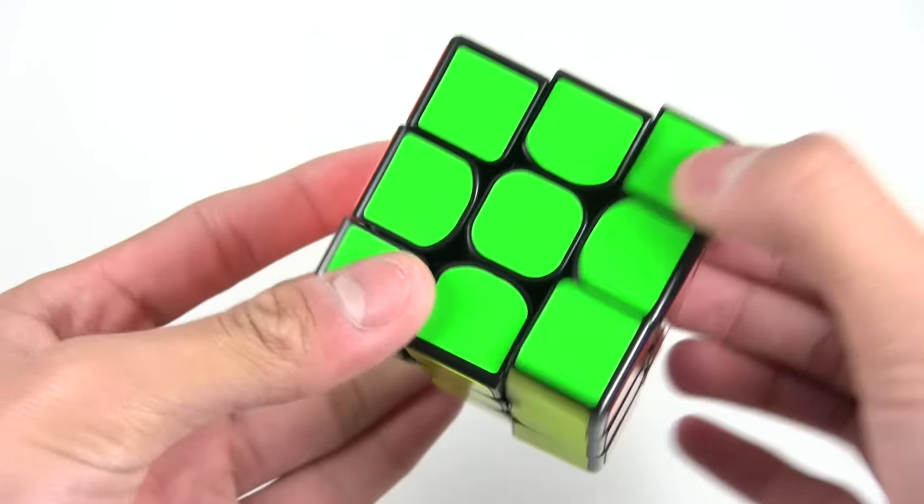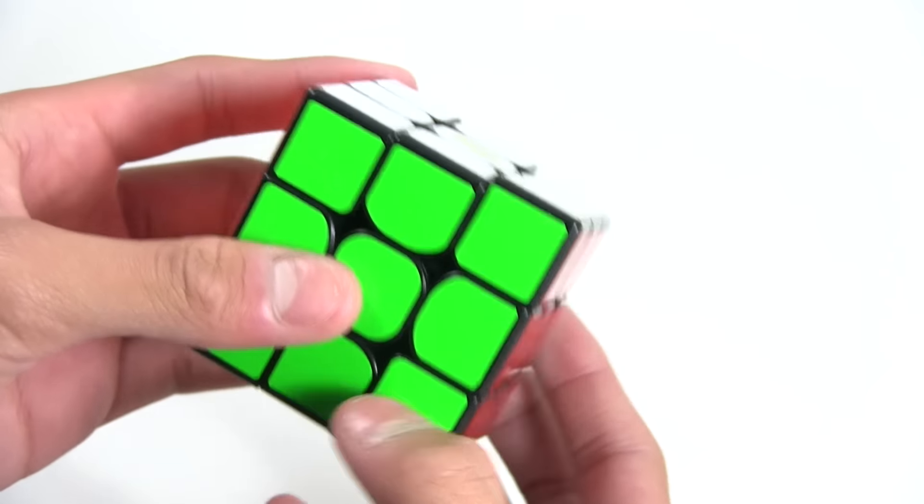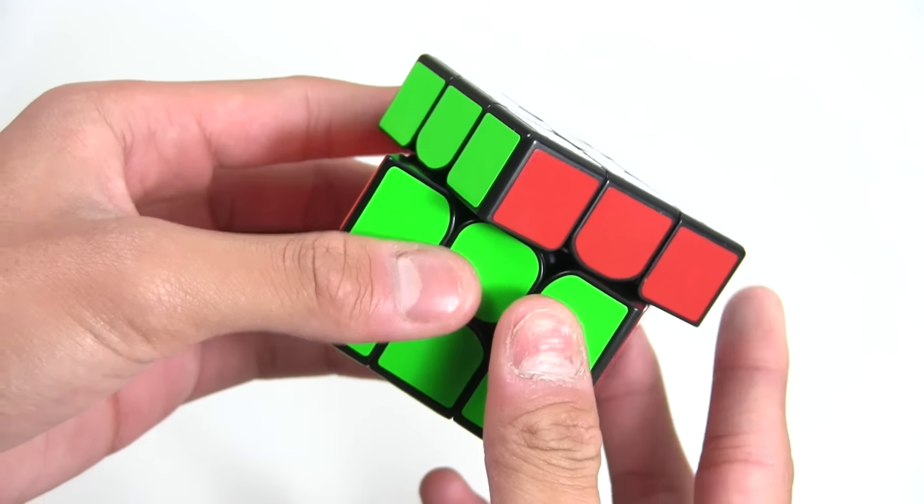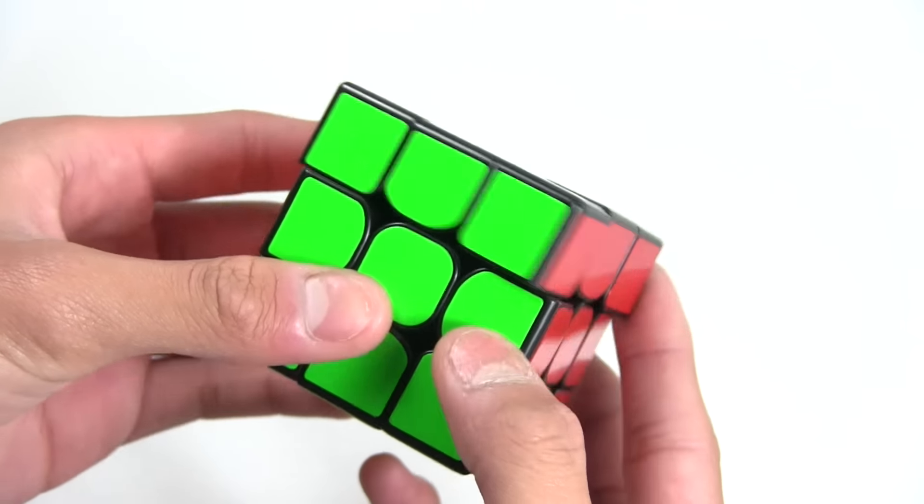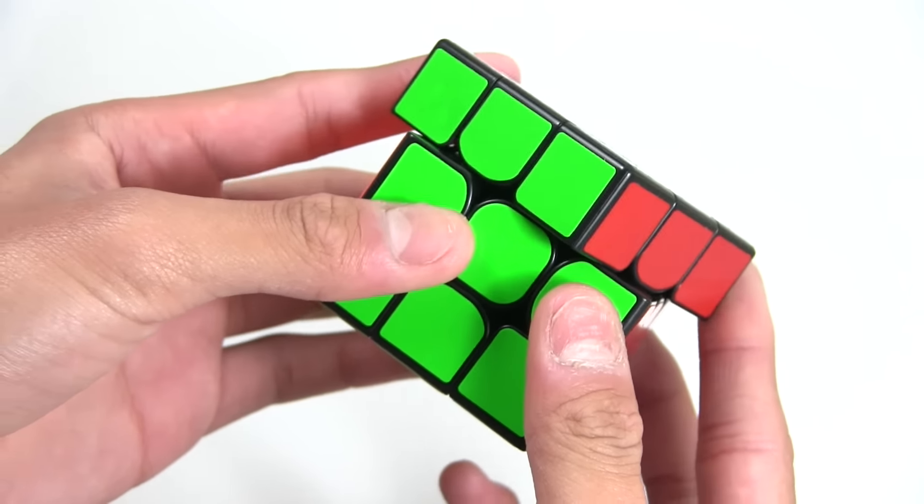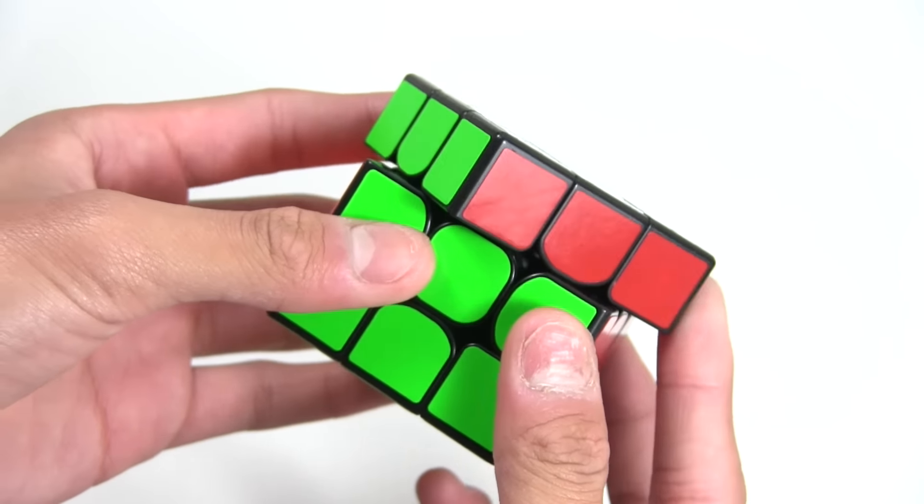Because I loosened it the stability was a little bit worse than it was before. But the good thing about that is that the corner cutting came really good. The normal corner cutting was almost two pieces and the reverse was more than one piece.